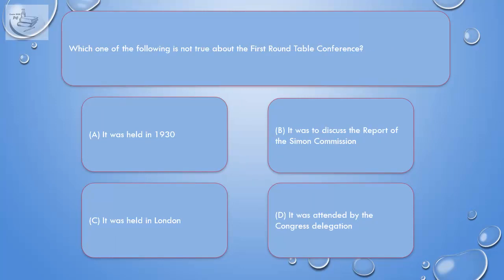Question: Which one of the following is not true about the first Round Table Conference? A. It was held in 1930, B. It was to discuss the report of the Simon Commission, C. It was held in London, D. It was attended by the Congress delegation.